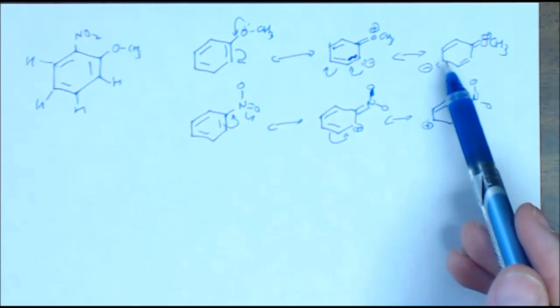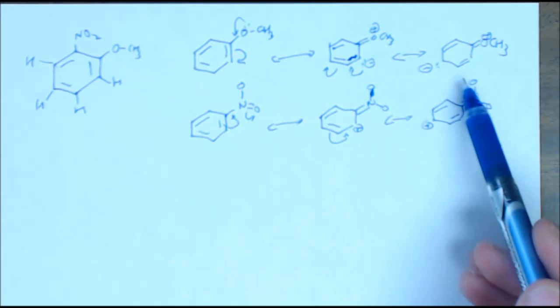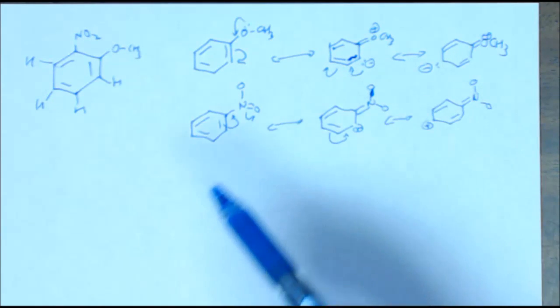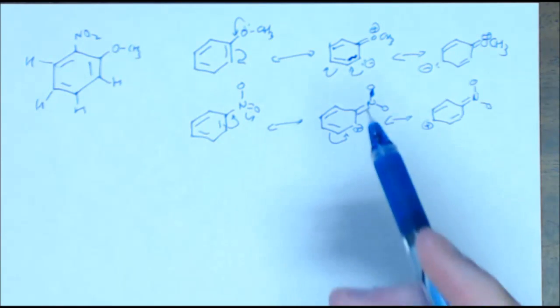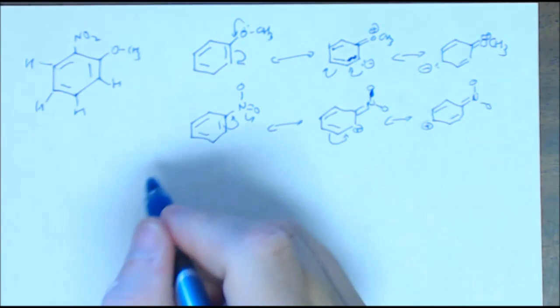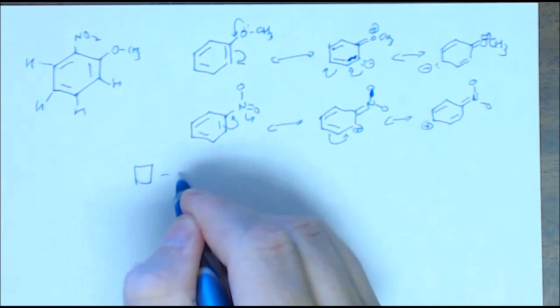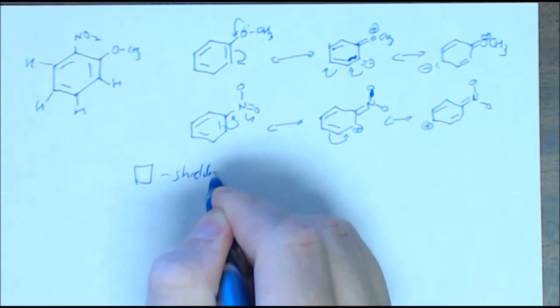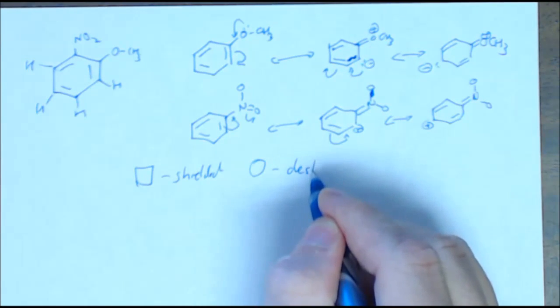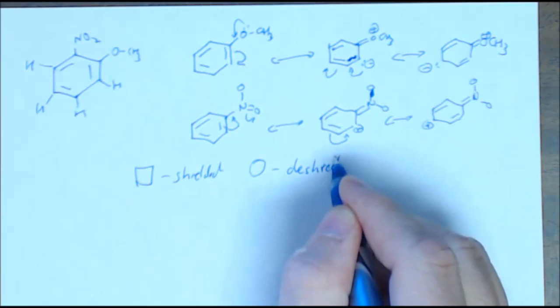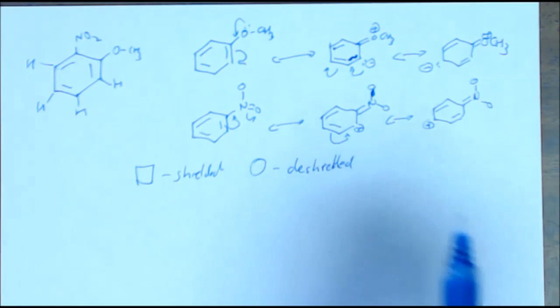We're also going to see increased electron density down here in the para position. Now because I see increased electron density there, I'm going to see these things become shielded. So what I'm going to do is I'm going to put squares around the things that are shielded and circles around the things that are deshielded.